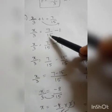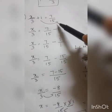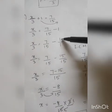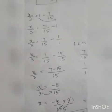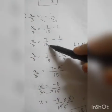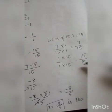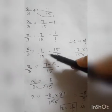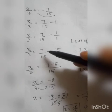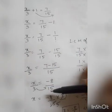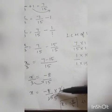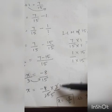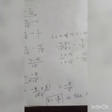So x equals minus 8/5 is the solution for this equation. To recap: shifting 1 to that side gives minus 1, then I wrote 1 as 1/1 since we are subtracting fractions. Making the denominators the same using LCM gives 7/15 minus 15/15 equals minus 8/15. Shifting 3 to the numerator and cancelling with 15 gives minus 8/5 as the solution.